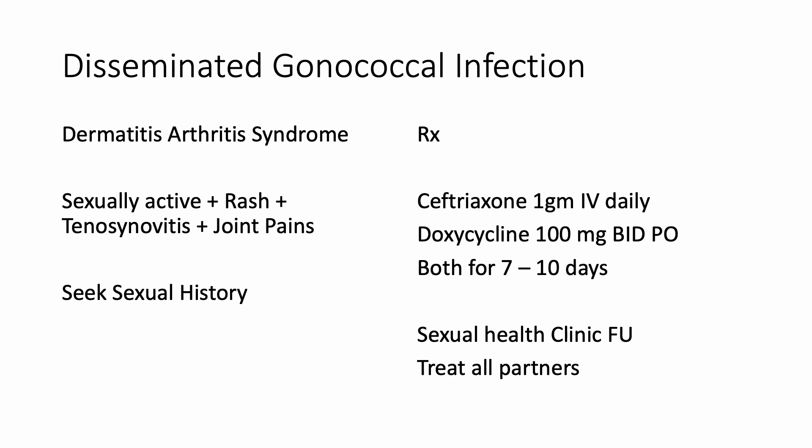The answer is B — gram-negative diplococci — which gives rise to dermatitis-arthritis syndrome: a sexually active male with a rash, tenosynovitis, and joint pain. You need to seek a sexual history in this case. The treatment for disseminated gonococcal infection is ceftriaxone 1 gram IV daily, plus doxycycline 100 milligrams twice a day for seven to ten days. Doxycycline is added to cover for simultaneously occurring chlamydia infection. These patients need treatment for seven to ten days, follow-up at a sexual health clinic, and partners must also be treated.